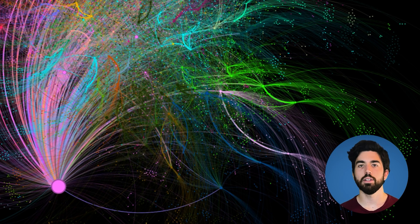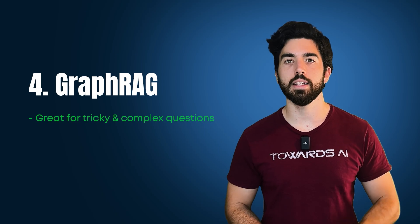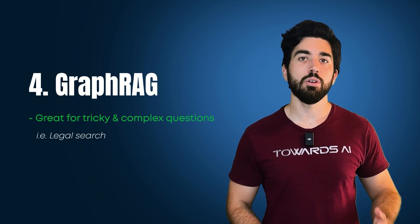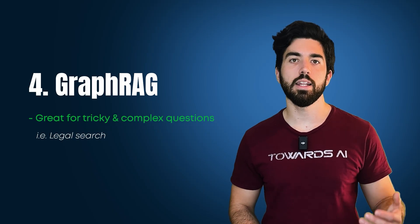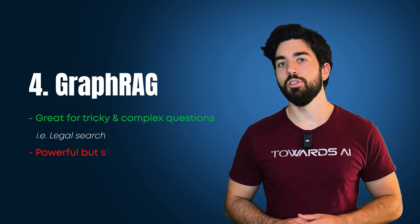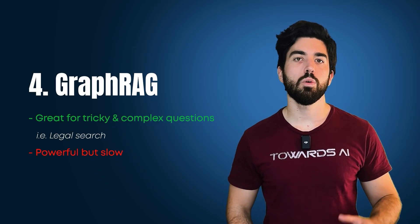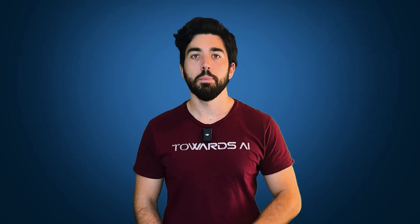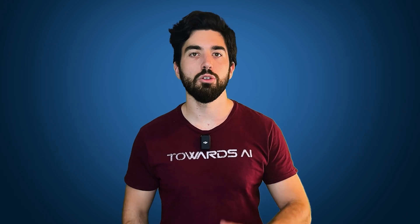We use GraphRAG when the data has complex connections. It's great for answering tricky questions that involve multiple pieces of information. Think of legal search where you need to understand how different cases and laws are connected. But be careful, GraphRAG is powerful but quite slow. Currently, it can take up to 10 times longer than simpler methods as measured by a recent Microsoft blog post. Make sure you really need it before you use it.